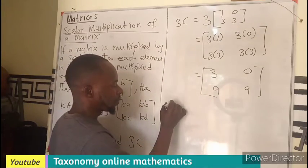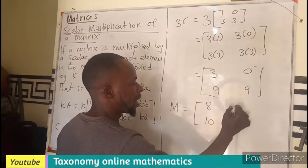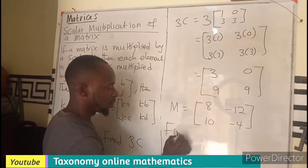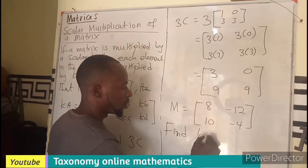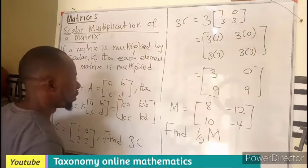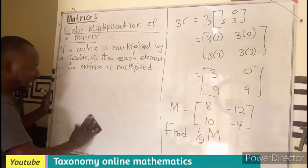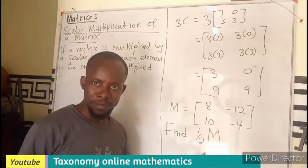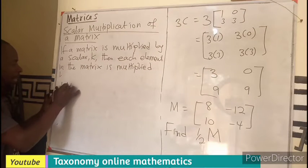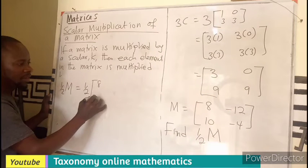For another example, we have M equals [8, 10; -12, -4]. You are asked to find half of vector M. Don't forget that half is our k, that is the scalar multiple. So your (1/2)M is going to be half times [8, 10; -12, -4].